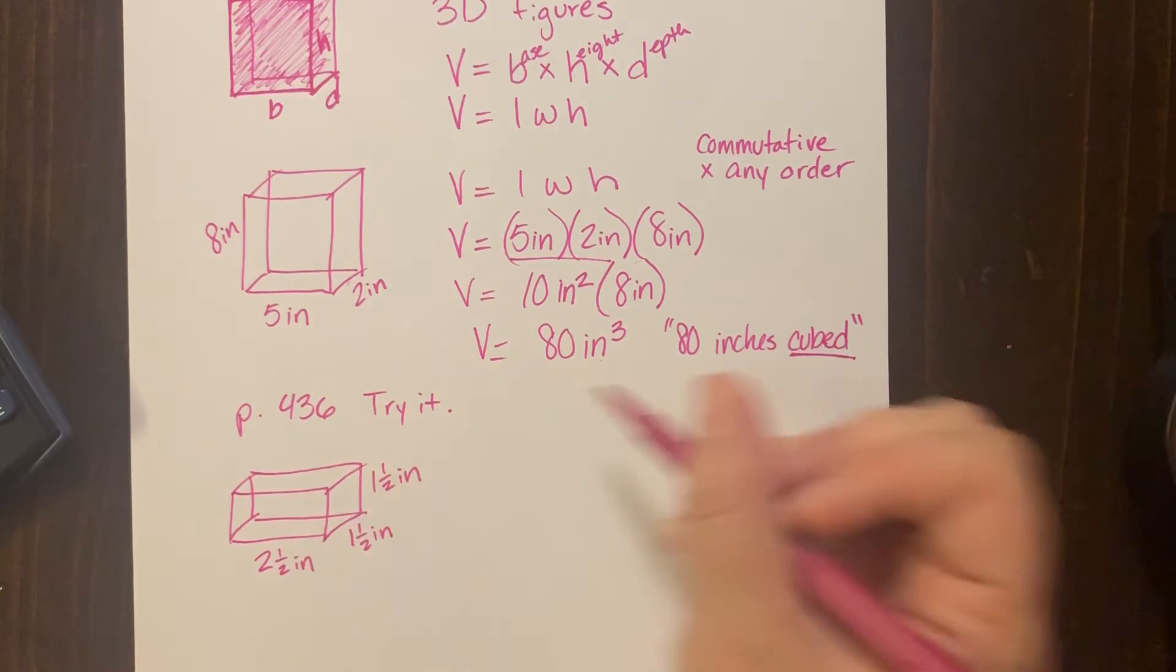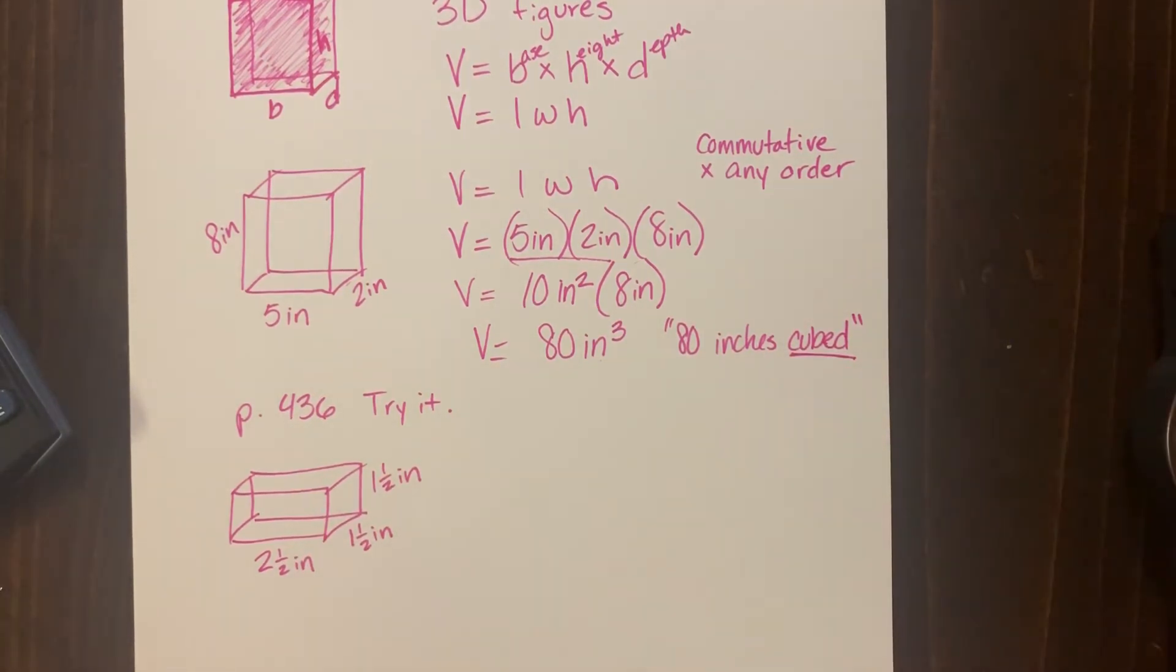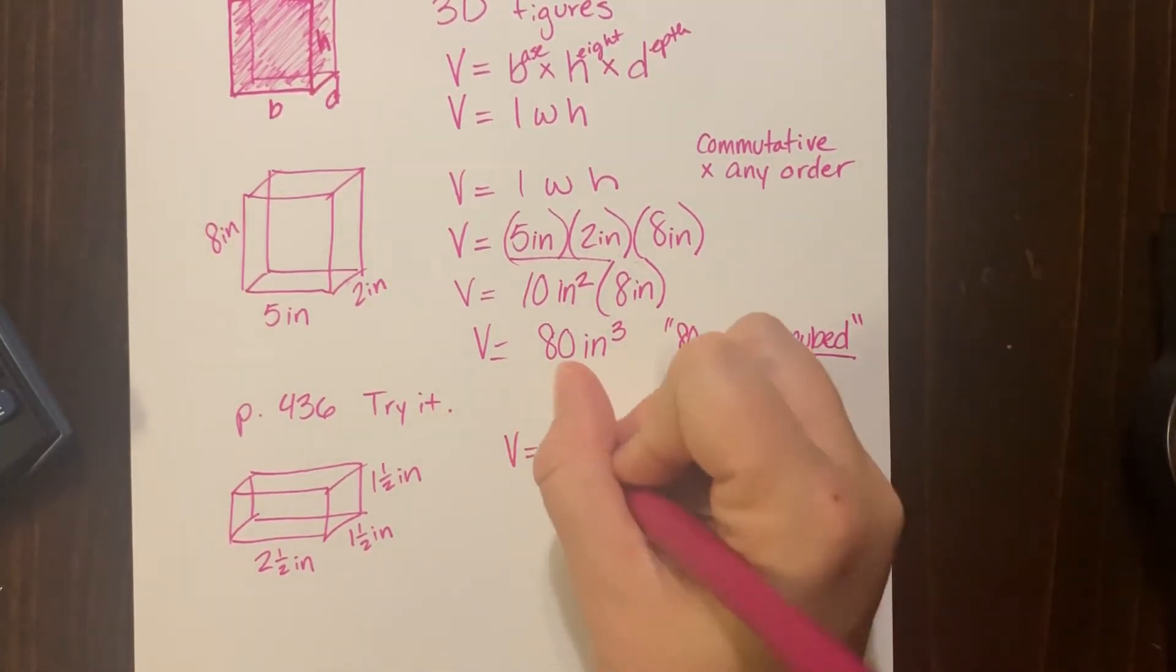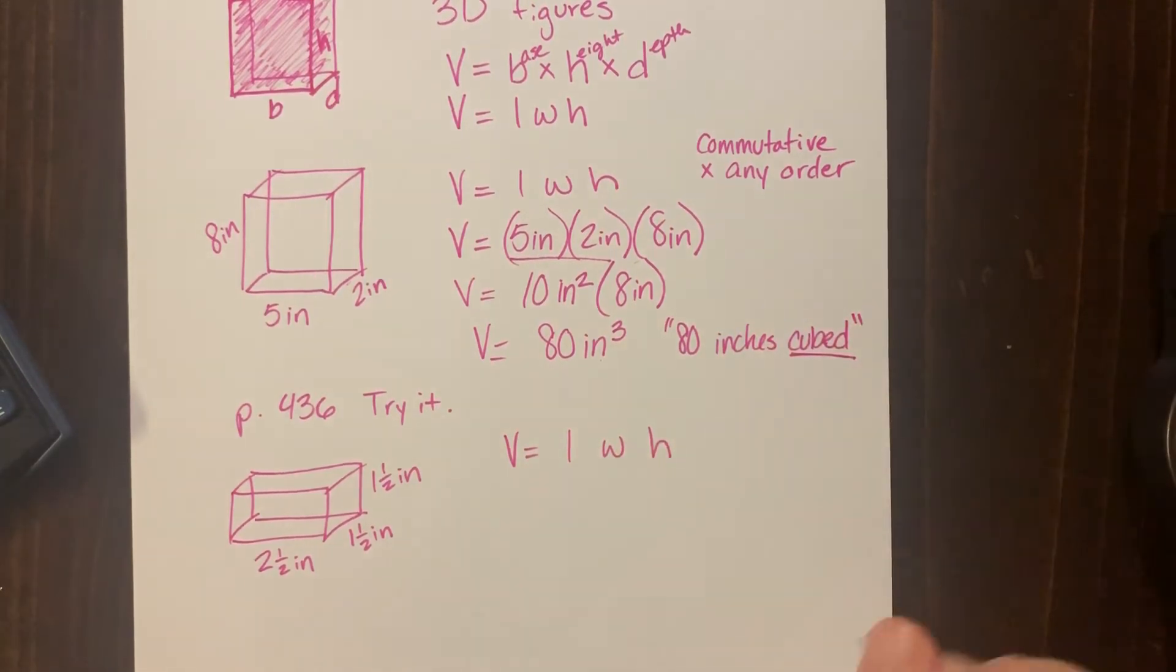This one is one and a half inches, and the height is also one and a half inches. So they've got all the cubes there for you. They're half inch cubes. That's why it's not five going across—it's half, one whole, one and a half, two whole, two and a half. They're counting by halves.